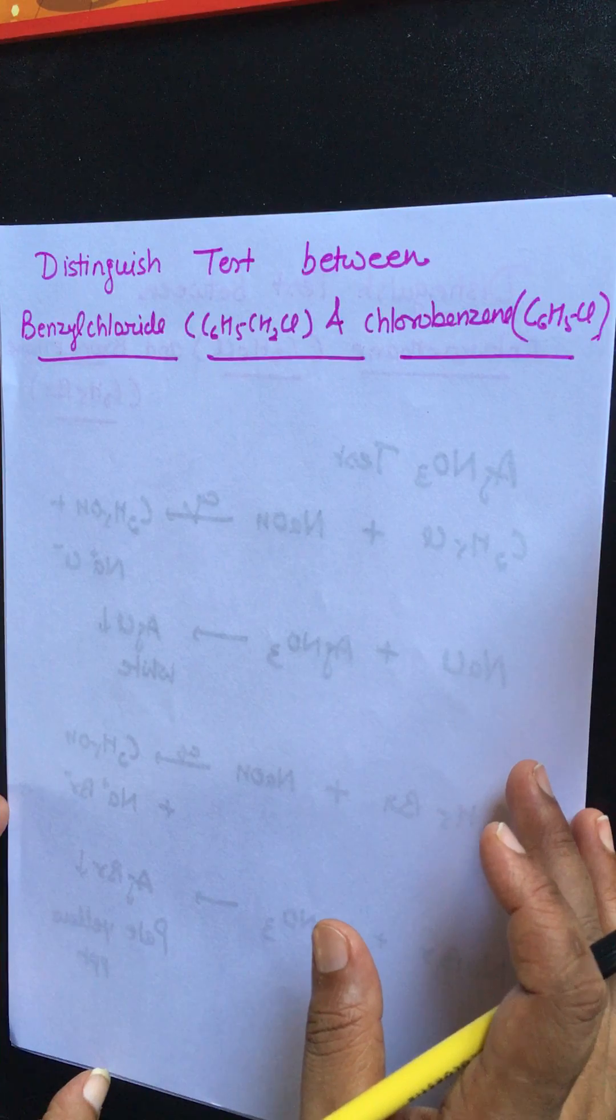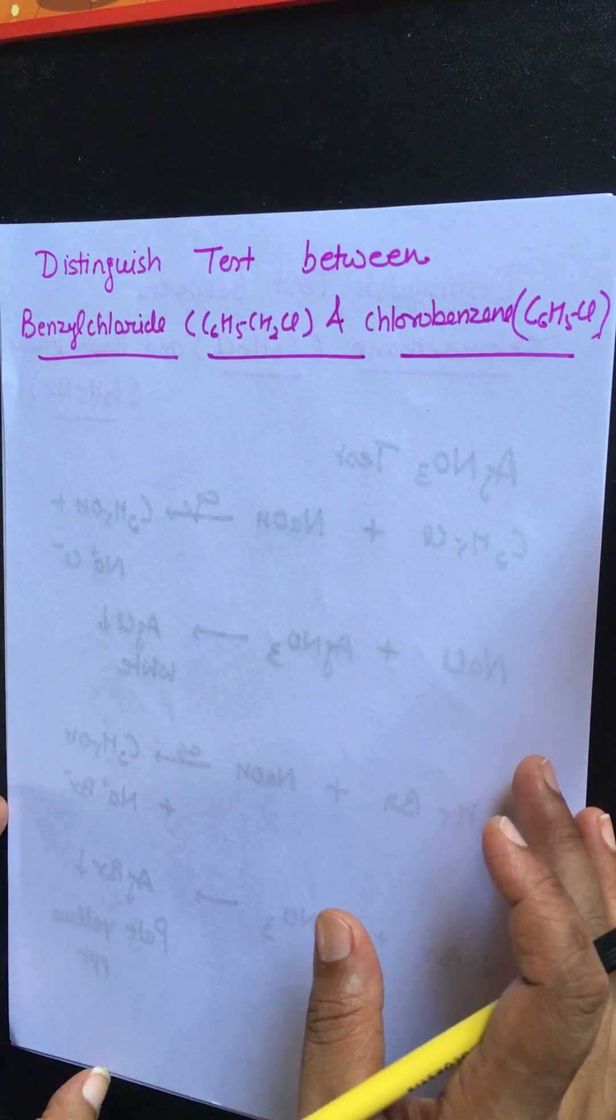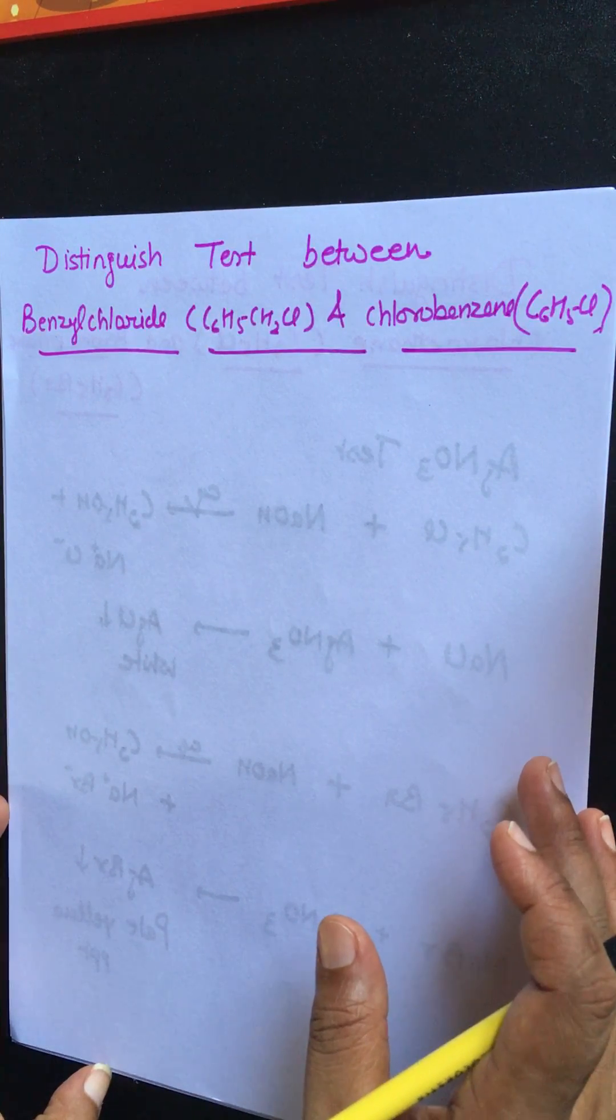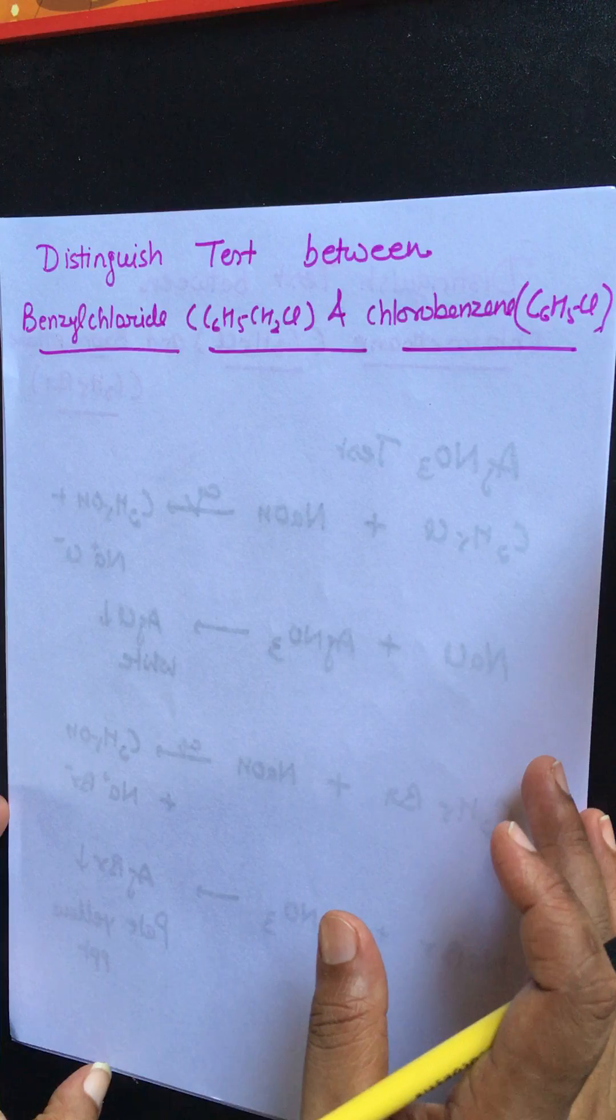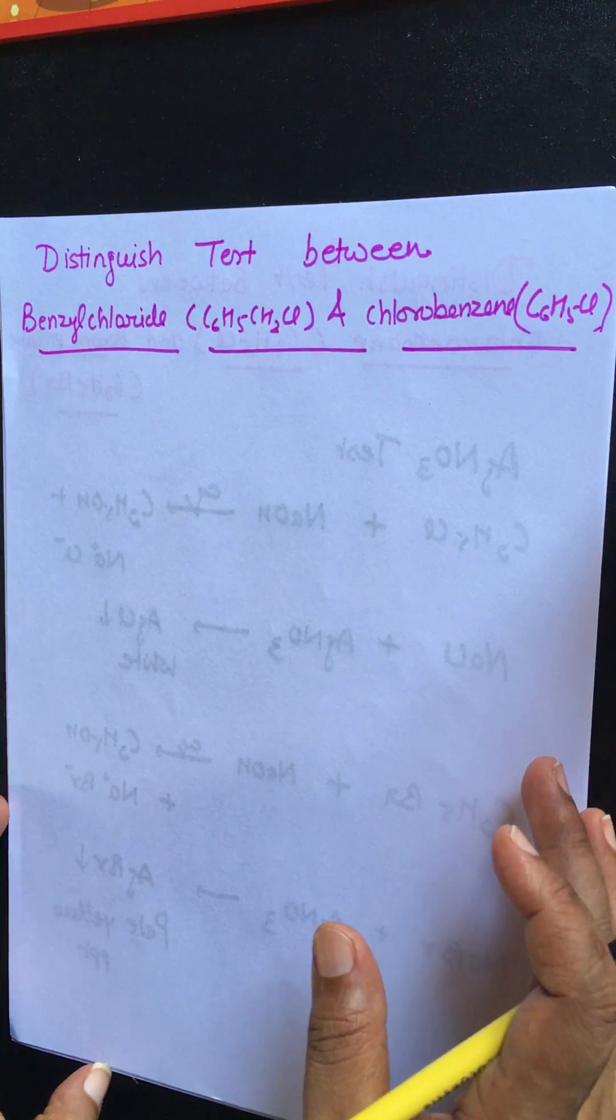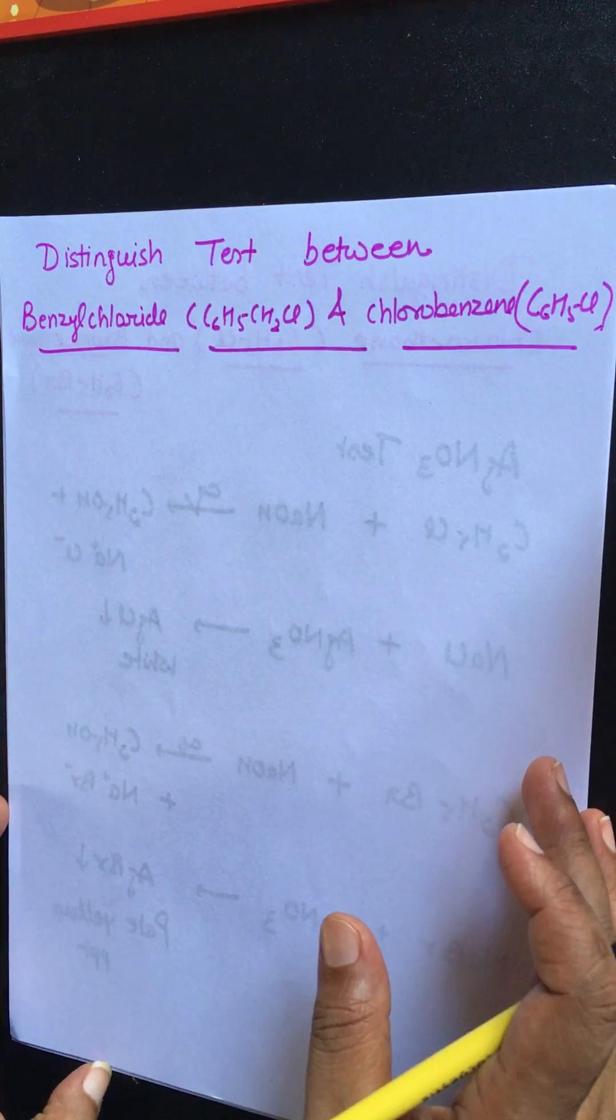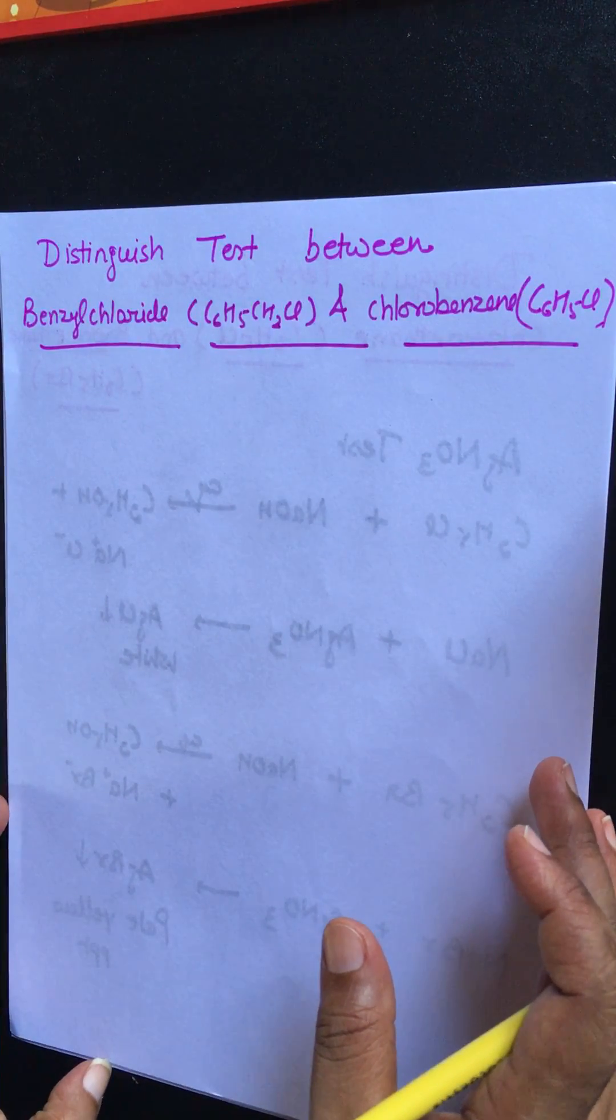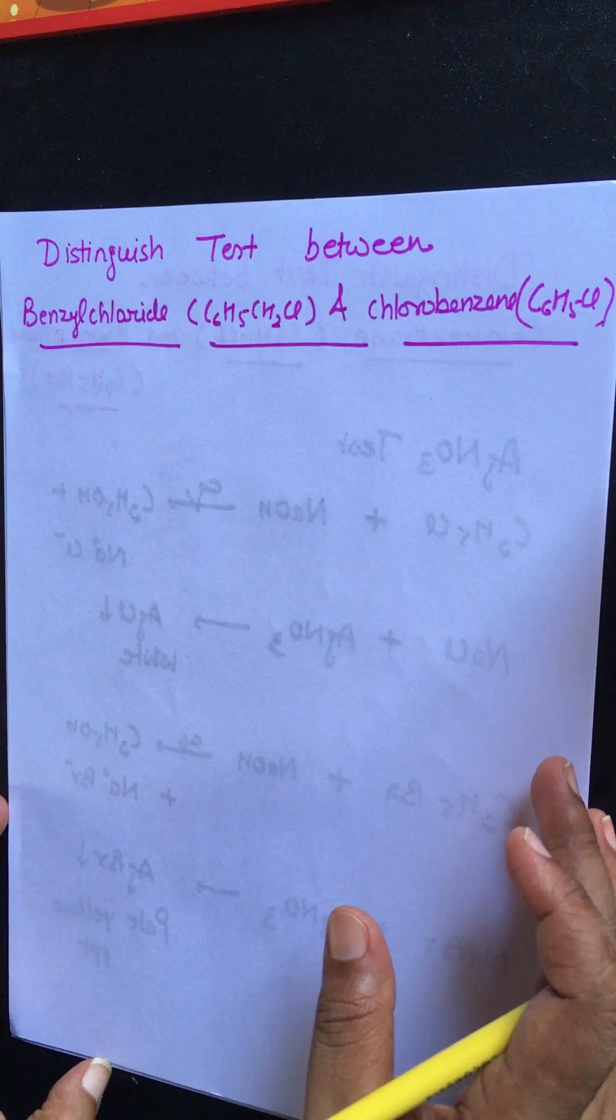We know benzyl chloride gives substitution reaction with aqueous alkali and chloride ions get substituted which react with the silver nitrate solution to give white precipitate of silver chloride, while chlorobenzene does not give substitution reaction in presence of aqueous alkali so doesn't give AgNO3 test.